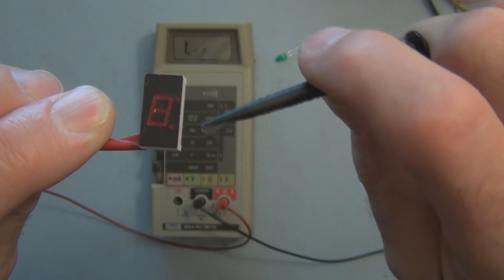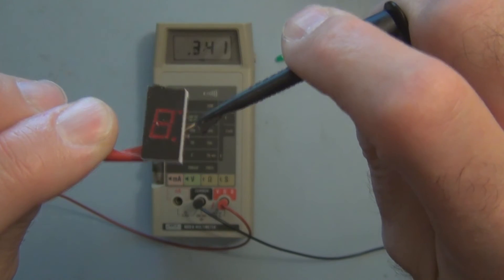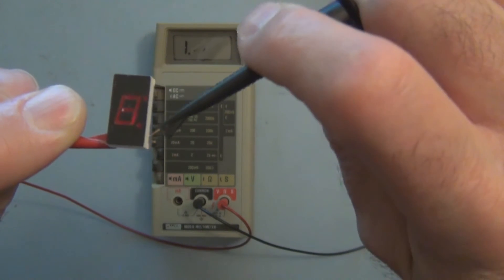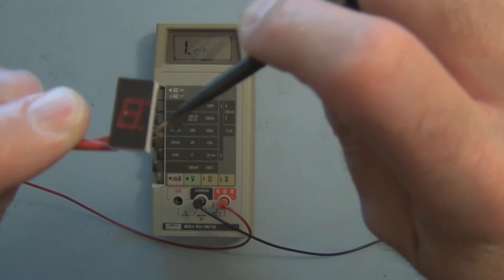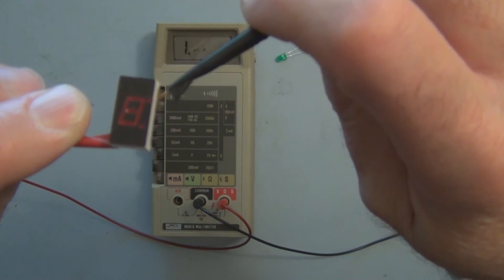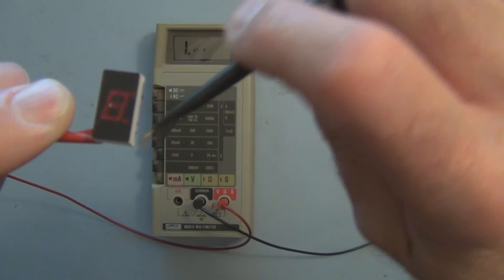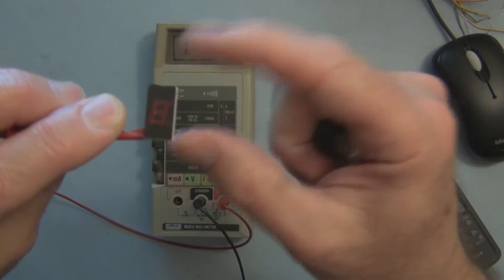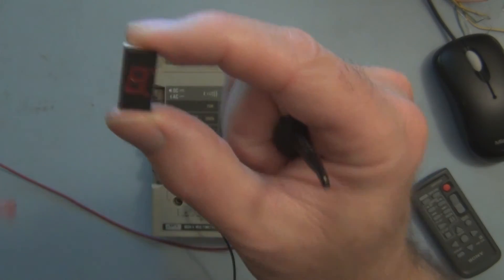So the anode is common to all the diodes, and you would apply a more negative signal to the cathode to get them to light. So this would be a common anode.